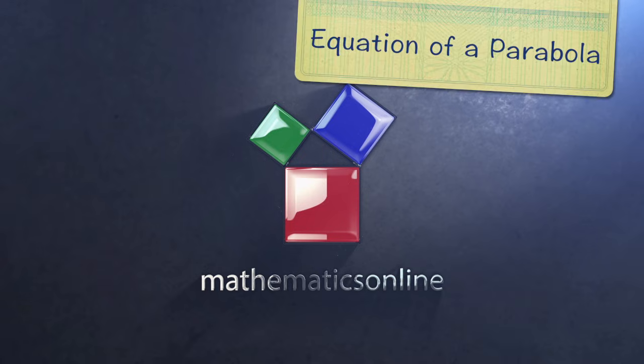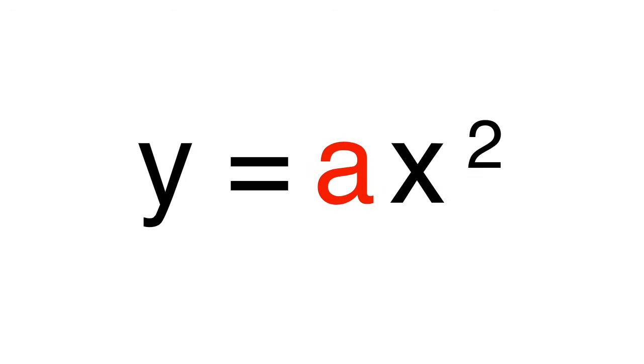Hello everybody, and this video is on deriving the equation of a parabola. So y equals ax squared is the equation of a parabola, but where does it come from?